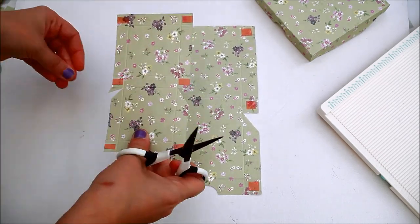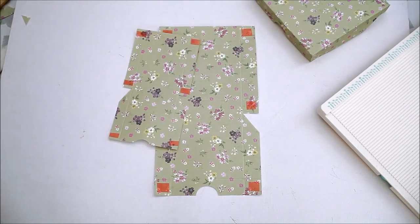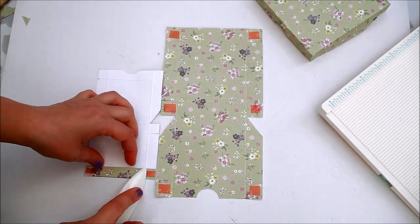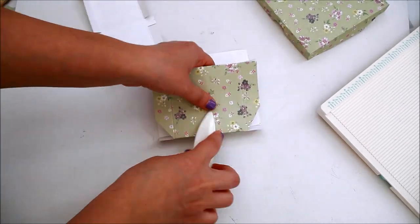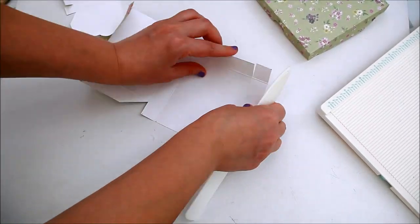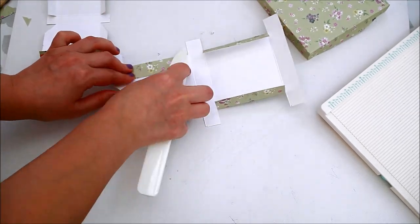I cut a semicircle on one side of the box which will be the lid. I trimmed the bottom of the lip on an angle and then assembled everything.